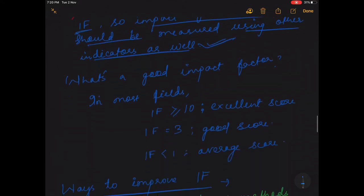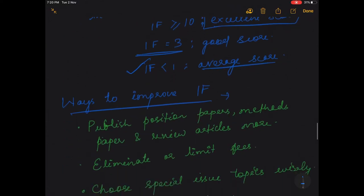Now what's a good impact factor of a journal? In most fields, the impact factor greater than or equal to 10 is considered as an excellent score, whereas good score if the impact factor is equal to 3 and above that. And if less than 1, it is called as average score.